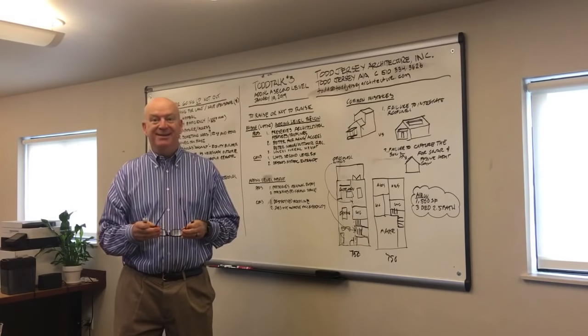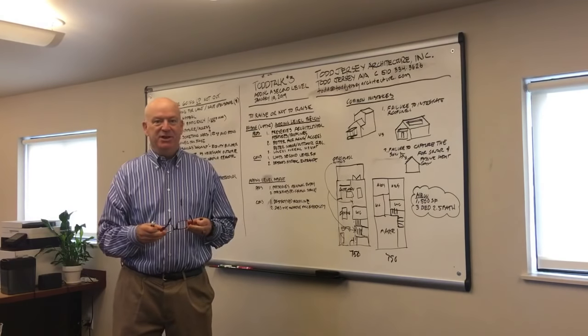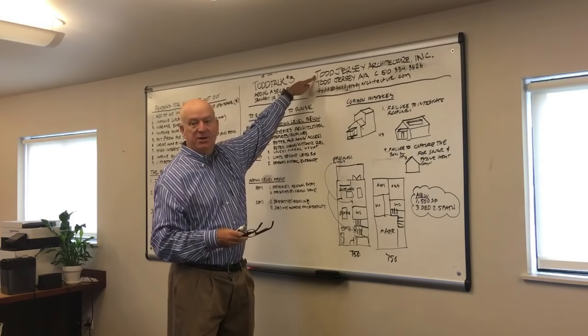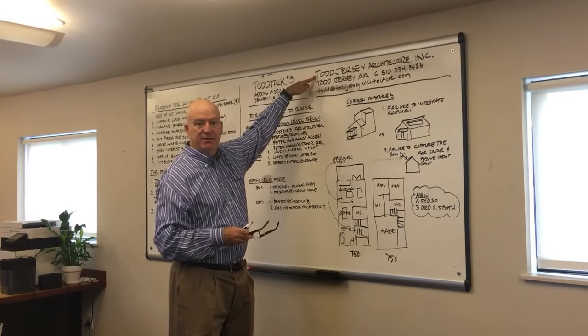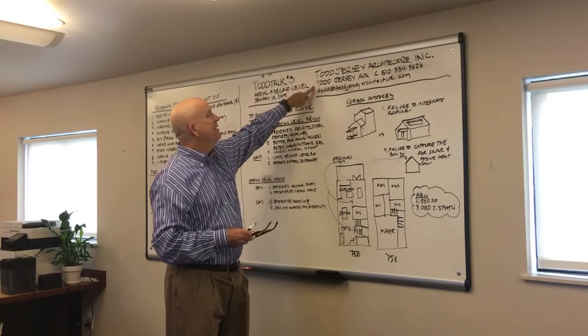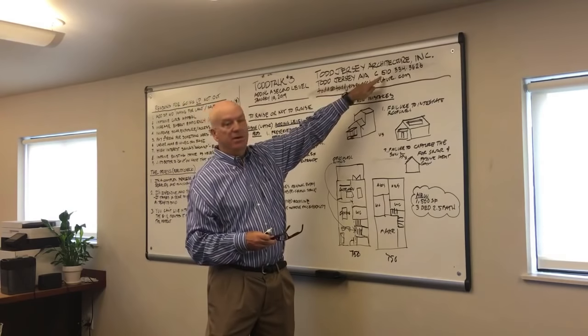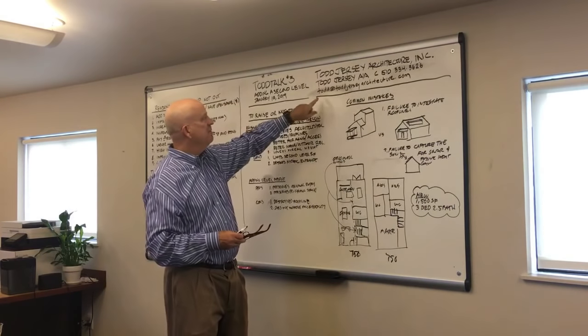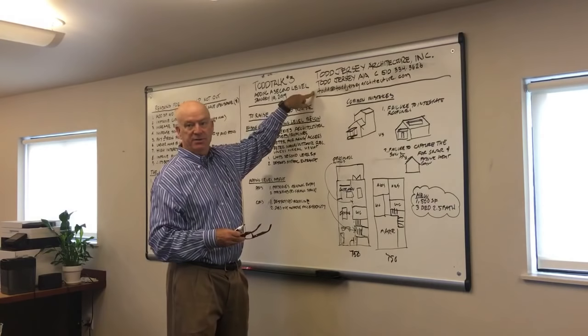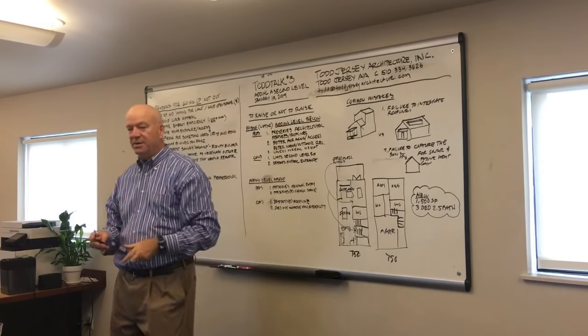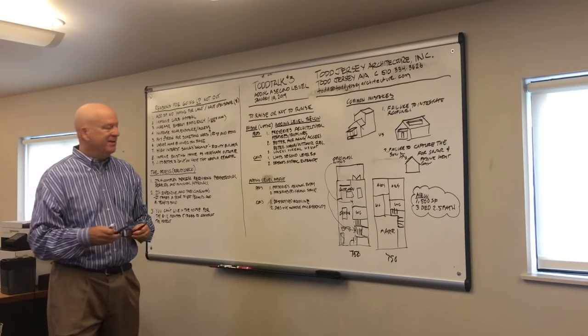Okay, good morning. We're going to be talking, this is Todd Talk number three. I'm Todd Jersey. This is me here. My firm is Todd Jersey Architecture, Inc. You are in the loft of our wonderful office in Berkeley, California. Here's my cell number, 510-334-3626. You can text me or call me anytime. My email address is Todd at ToddJerseyArchitecture.com. My staff is with me, and there's a couple of guests. Thank you for being here live.